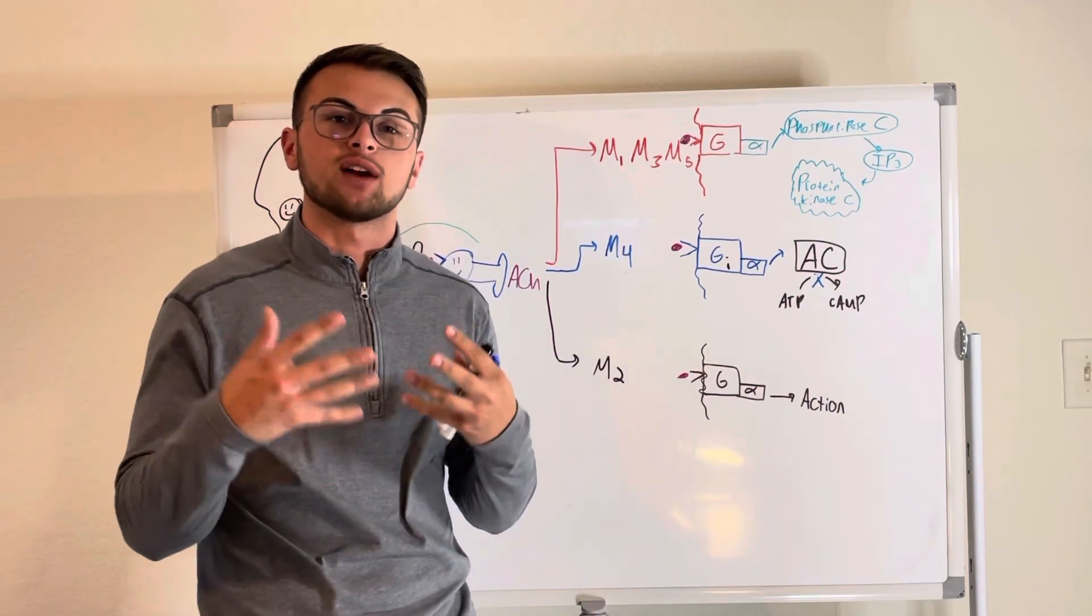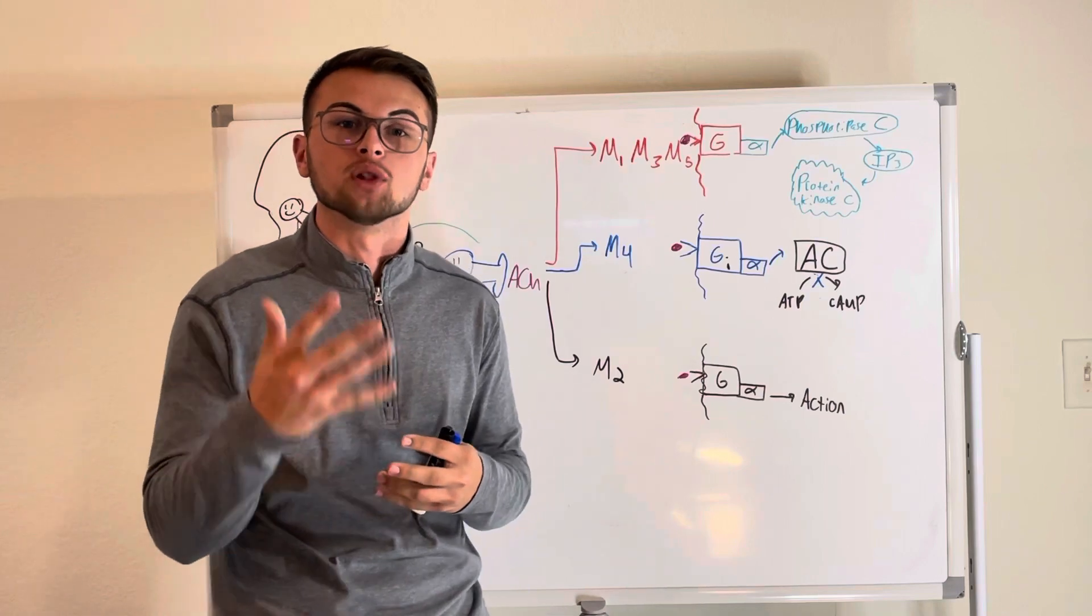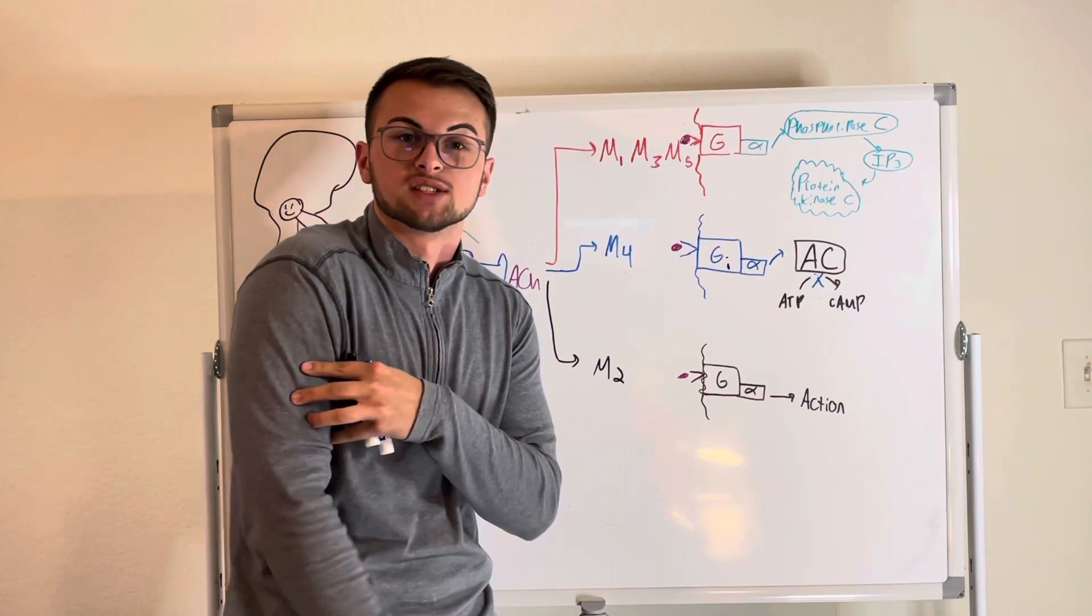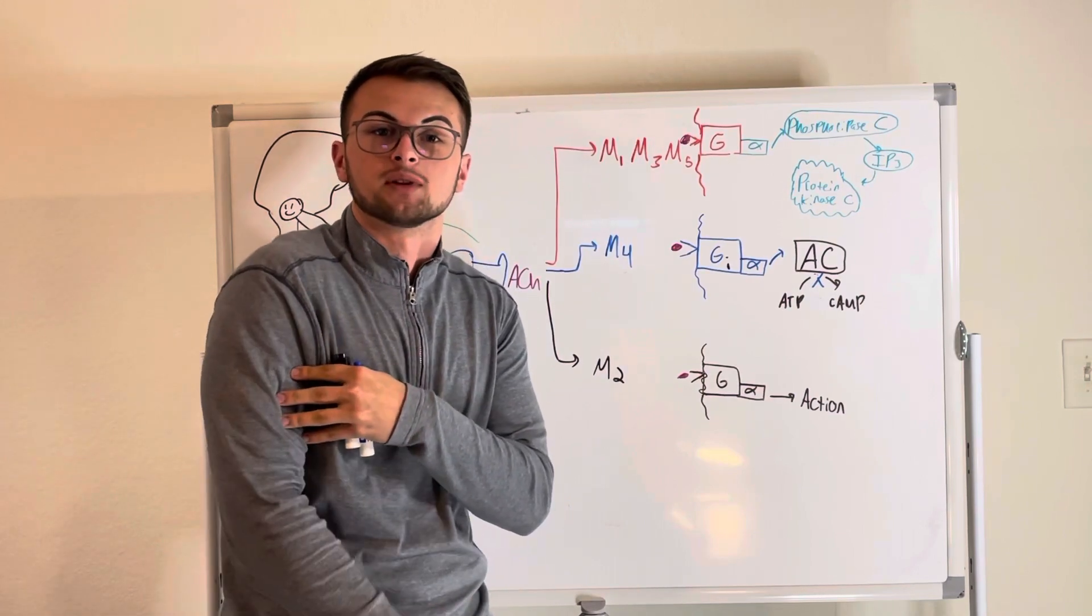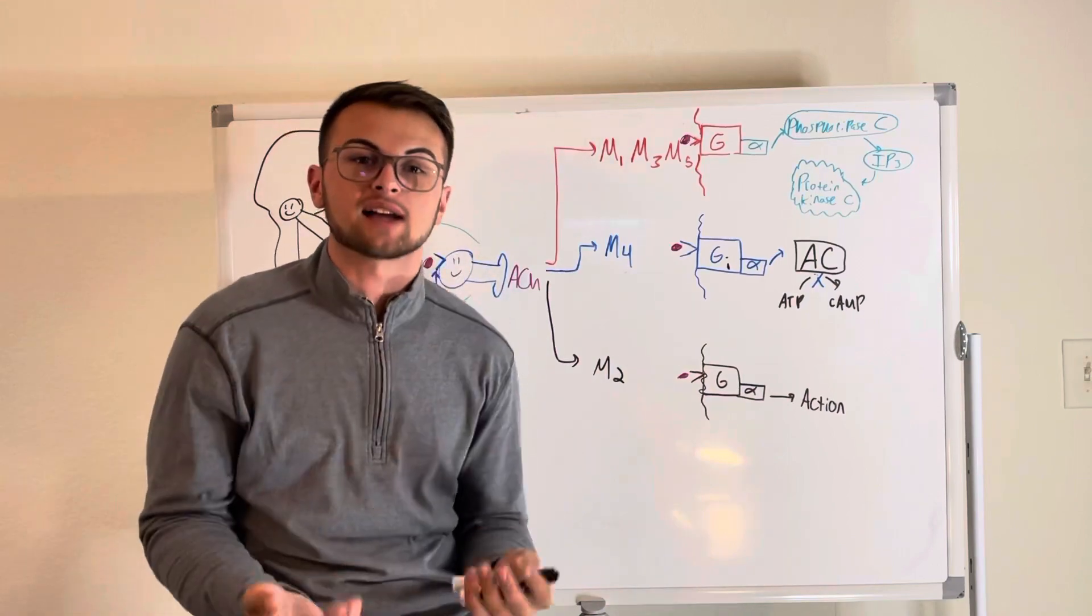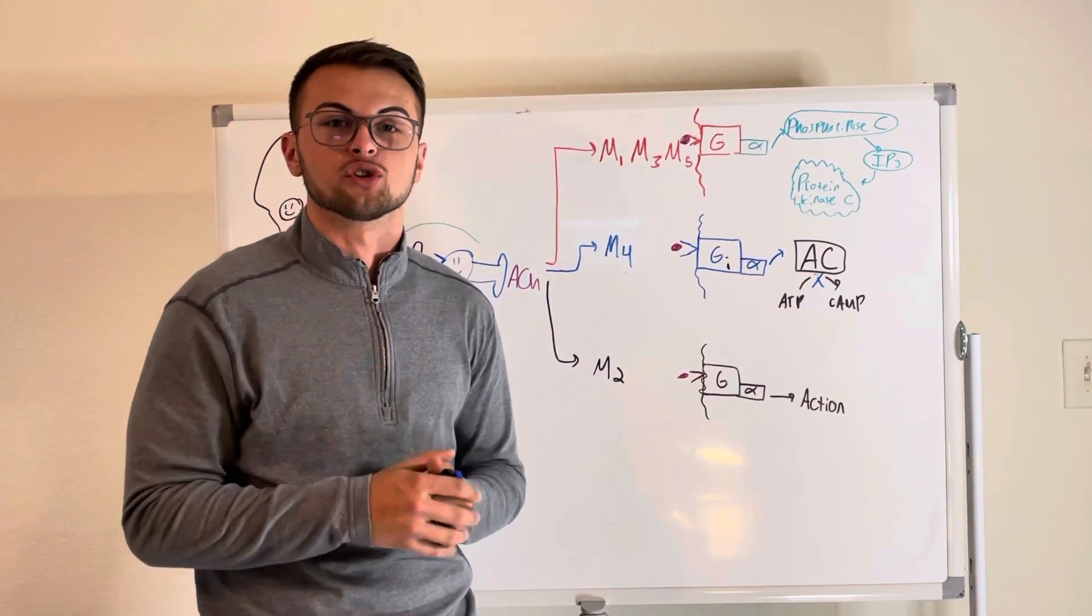So drugs like vecuronium and rocuronium will block this N1 receptor to cause skeletal muscle paralysis. So it will cause our muscles to become flaccid or limp. This is very helpful to relax the body's muscles before surgeries.